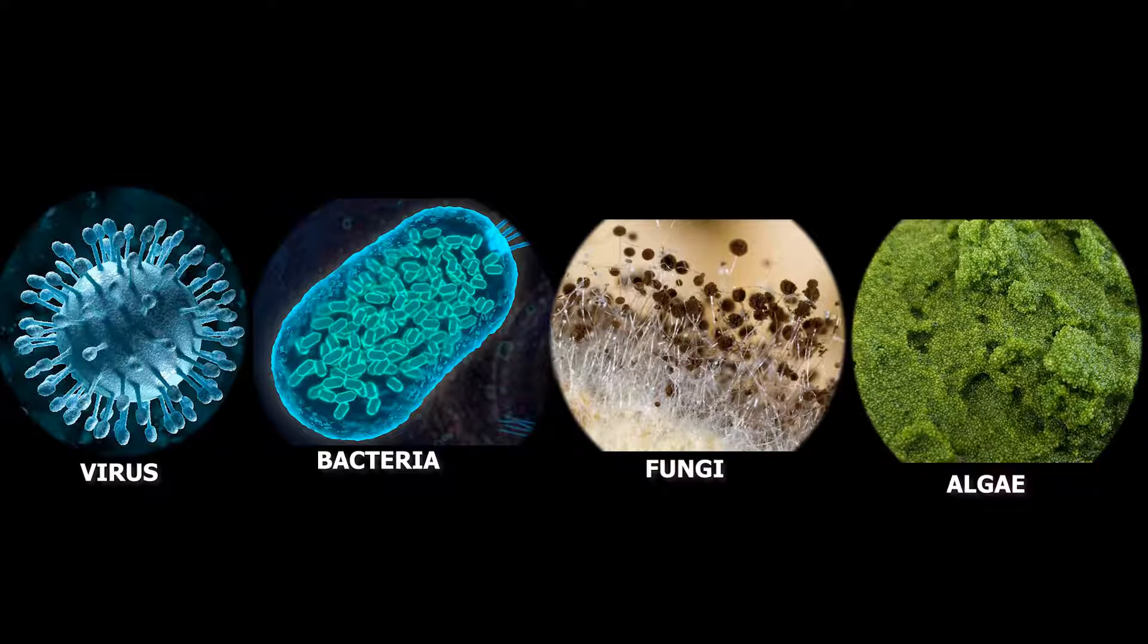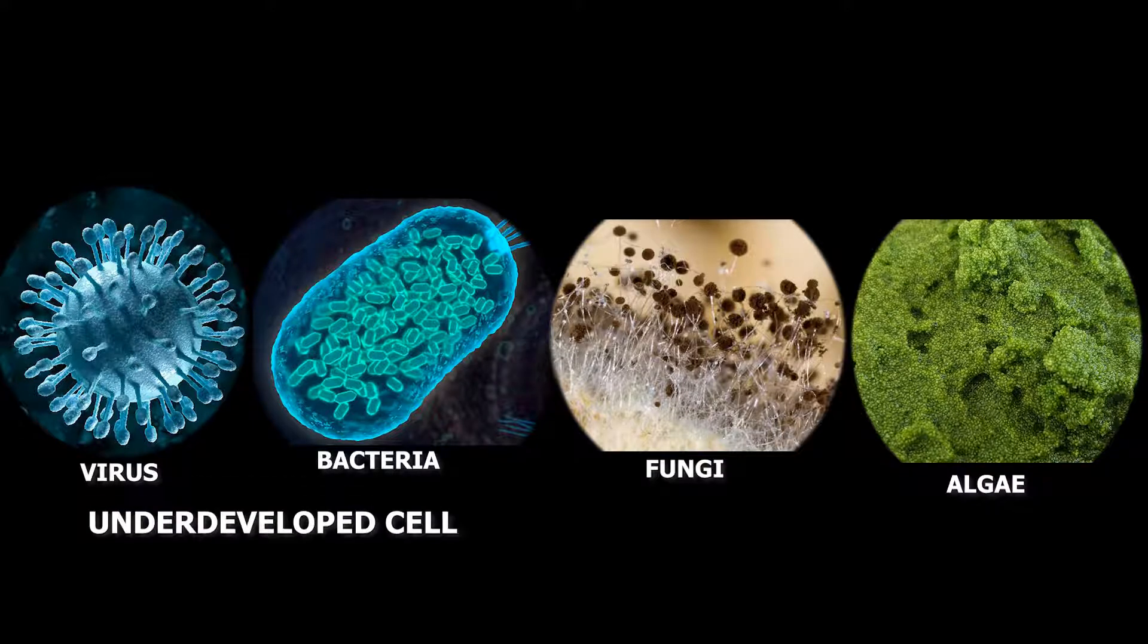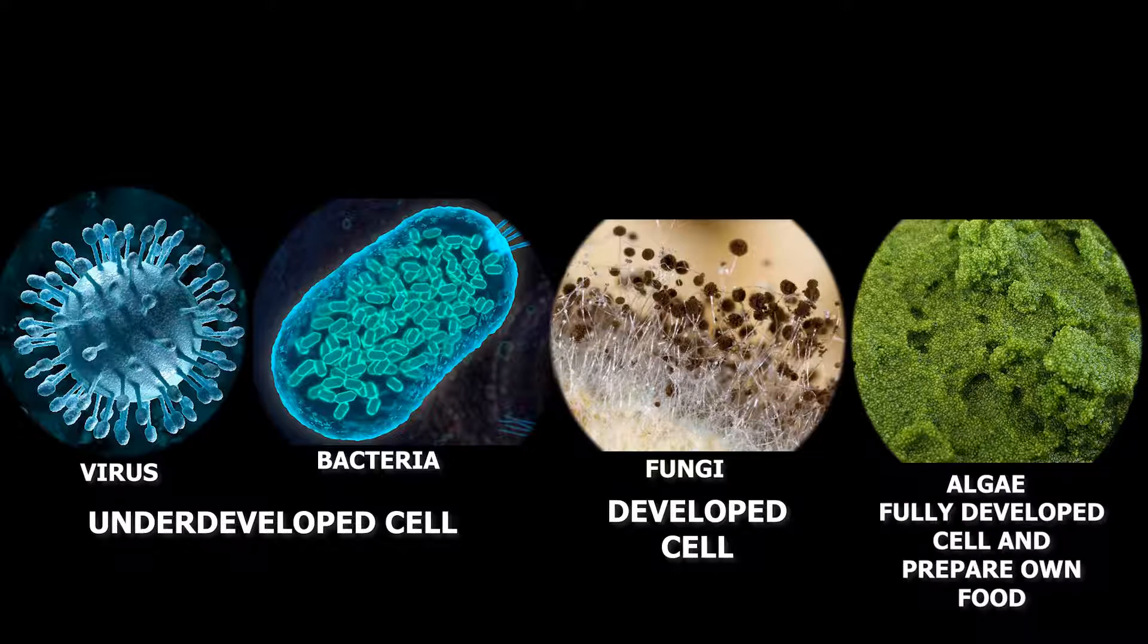We have seen that virus and bacteria are very primitive and do not have developed cells. Though fungi have developed cells, they are majorly dependent on other living or dead organisms for food. Algae have fully developed cells and prepare their own food.